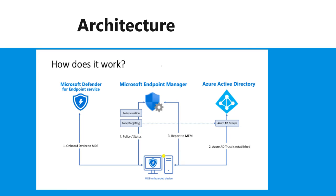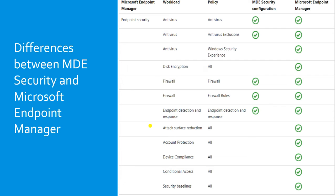Here is the architecture — let's quickly understand how it works. First, Microsoft Defender for Endpoint services enrolls the device to MDE. Then it checks whether Azure AD trust is established, checks Azure AD groups, reports to MEM, sends details to MEM, and gathers policy creation. If you want to deploy any customized policy from MEM, it will replicate back to your device.